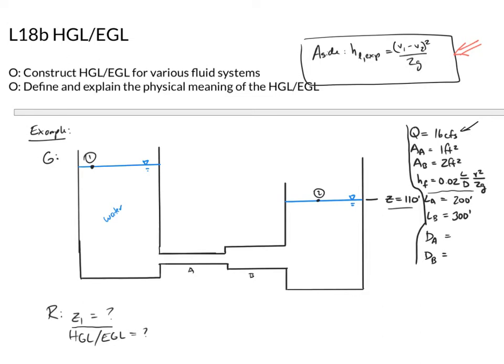We need diameters dA and dB to plug into the friction loss formula. Since the pipes are round, we use A = π d² / 4 and back-calculate: dA is 1.128 feet and dB is 1.596 feet.